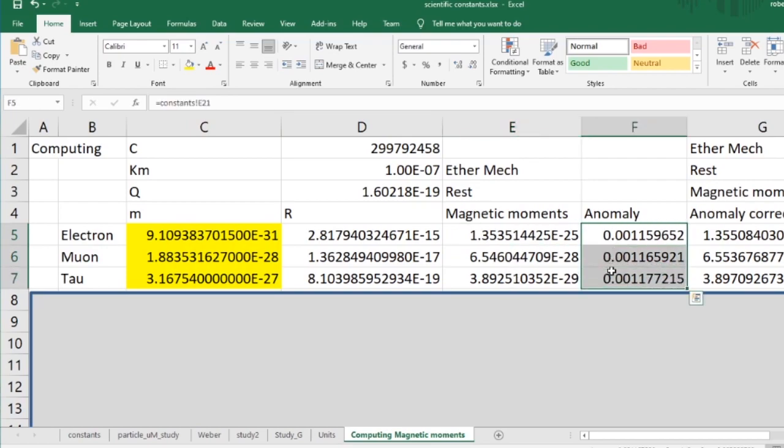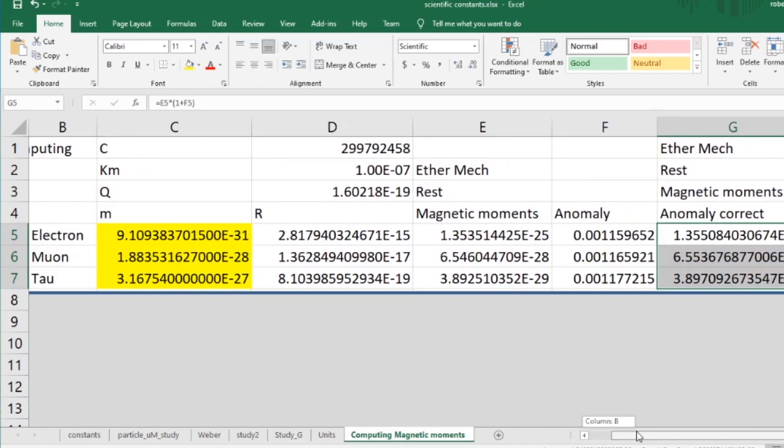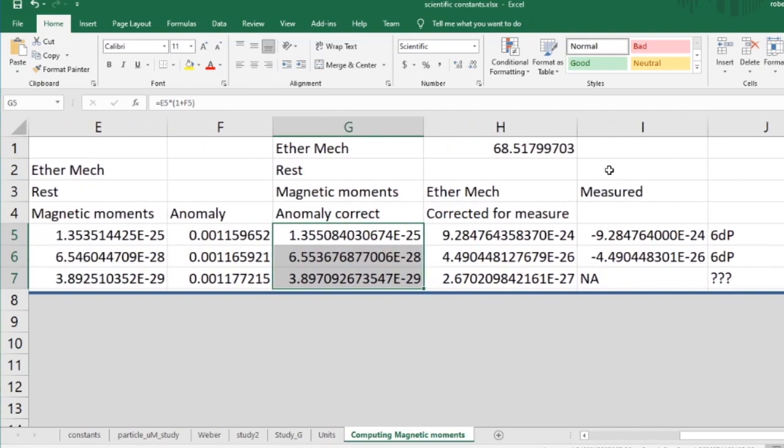The ethereal mechanics rest magnetic moments are these guys. Here is the constant. We're going to multiply this constant. This converts from the rest magnetic moment to the measuring magnetic moment. Because remember what I told you, when you measure it you disturb it. Luckily the physicists are doing it the same way for the electron and the muon, and hopefully they'll do it again when they ever figure out how to measure it for the tau. These are the ethereal mechanics predicted values for the magnetic moments of the three particles. These are the measured values that are published. As you can see, we are accurate down to six decimal places. I'm assuming that my published value here should be accurate to six decimal places as well.